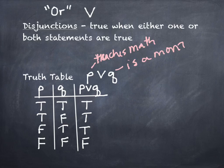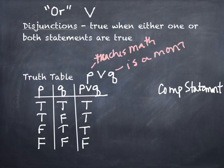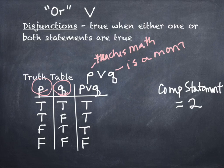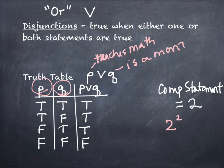Going back to the disjunction truth table: how many component statements are there? There are only two letters — P and Q. The third element just joins them; it's not a separate letter. So with two component statements, 2^2 = 4 rows. And indeed, that table had four rows. The formula works.